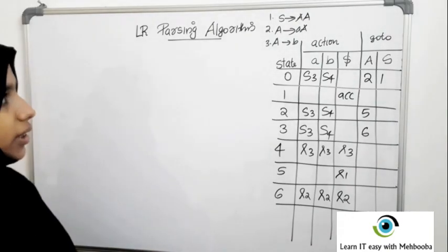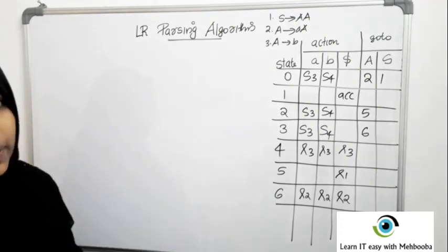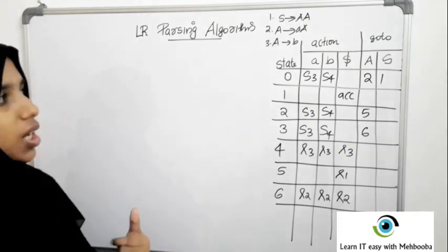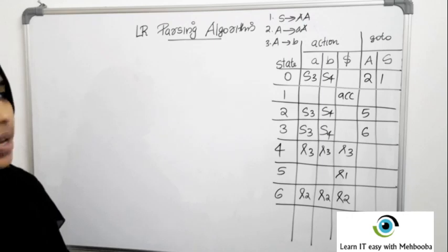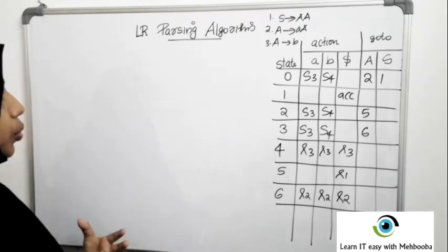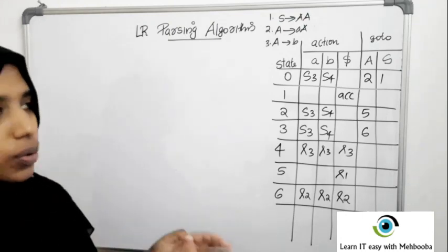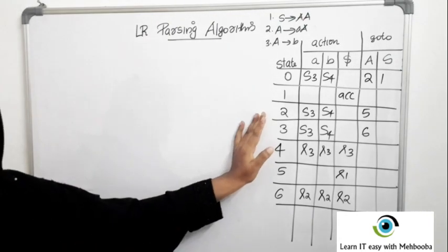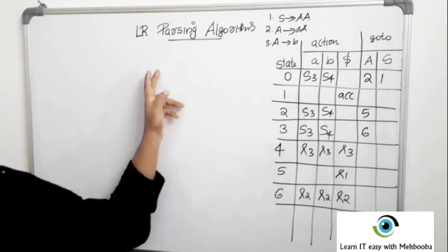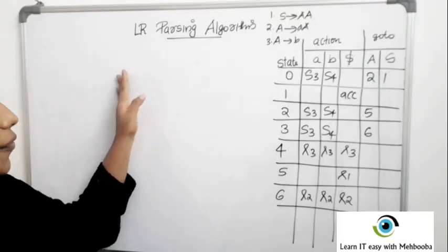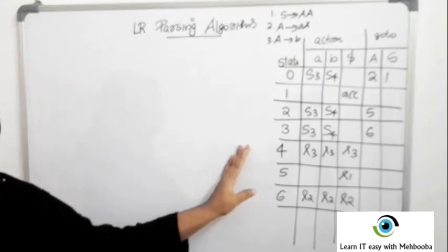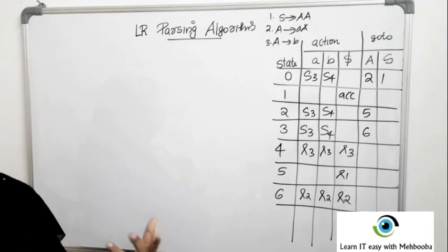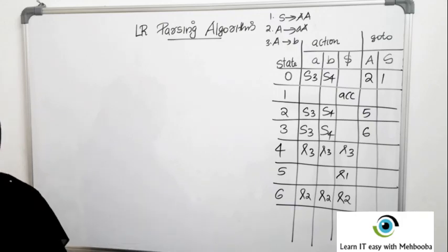In this video we will see the LR parsing algorithm. The algorithm is named LR parsing because it is the same for SLR, CLR, and LALR parsing. The only difference is the parsing table. If you want to do LALR parsing, use this algorithm with the LALR parsing table. For SLR parsing, use this algorithm with the SLR parsing table, and similarly for CLR. Construction of parsing tables is discussed in previous videos, so please refer to those.